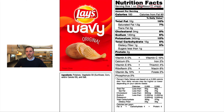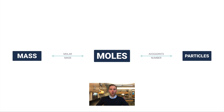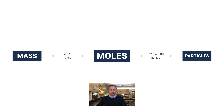Lay's doesn't have someone counting out 11 chips per serving — they fill bags by weight, by mass, which is faster. In chemistry, we physically cannot count out particles, so we have to weigh substances to know how many particles are in a sample. Our roadmap: moles allows us to get between mass and particles, and the molar mass is what allows us to convert between mass and moles.